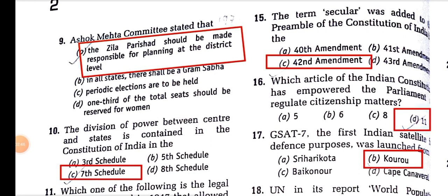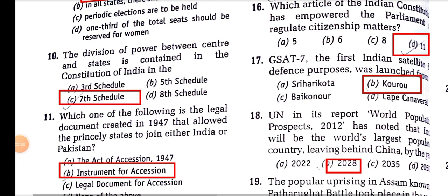Which article of the Indian Constitution has empowered the Parliament to regulate citizenship matters? It is Article 11.